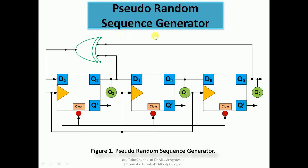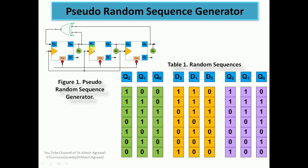This is a simple design of a pseudo-random sequence generator. A sequence of three bits at a time is generated from Q2, Q1, Q0. The sequence is random in nature the first time, and then the same sequence repeats again and again — that is why it is termed a pseudo-random sequence generator.